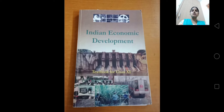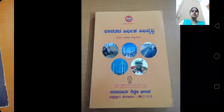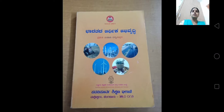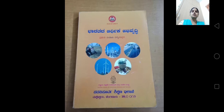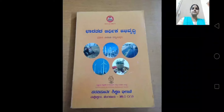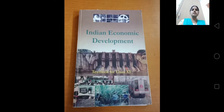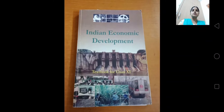Part 1 is Statistics for Economics and Part 2 is Indian Economic Development. Students, you have to buy these two textbooks. One is Statistics for Economics and the other one is Indian Economic Development. Both are NCERT textbooks.